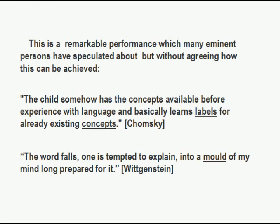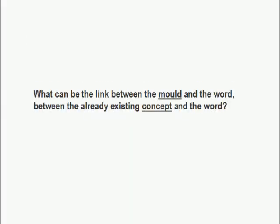Chomsky suggested that the child somehow has the concepts available before experience with language, and basically learns labels for already existing concepts — the concepts referring to objects and so on. Wittgenstein says the word falls, one is tempted to explain, into a mould of my mind, long prepared for it. But what can be the link between the mould — Wittgenstein's mould — and the word, between the already existing concept and the word?